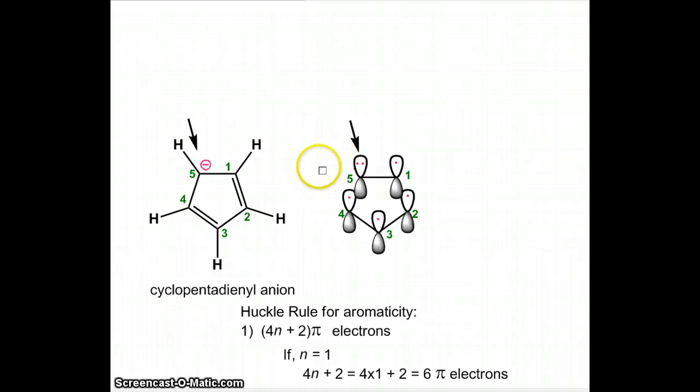This is the same structure but I have shown p orbitals on each of the five carbon atoms. Carbon 1, 2, 3, and 4 has p orbitals. I have not shown the hydrogen, it wasn't necessary. Carbons 1, 2, 3, and 4 have p orbitals, and if you look at carbons 1, 2, 3, and 4, each has one electron in their p orbital.